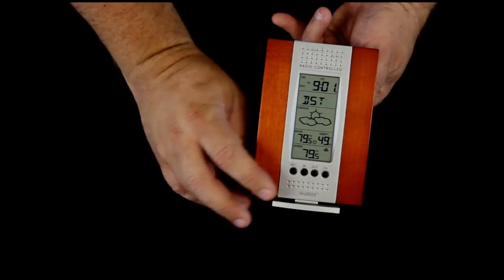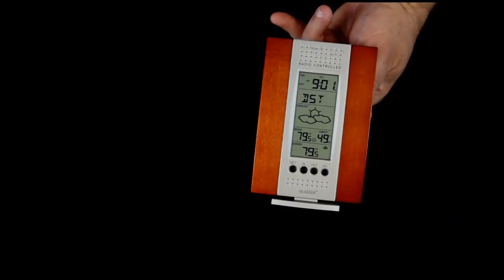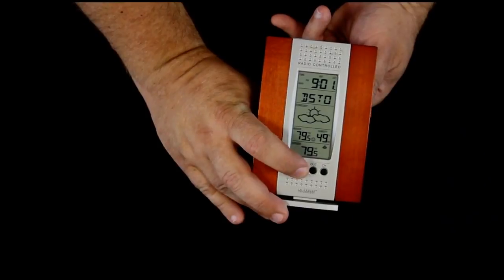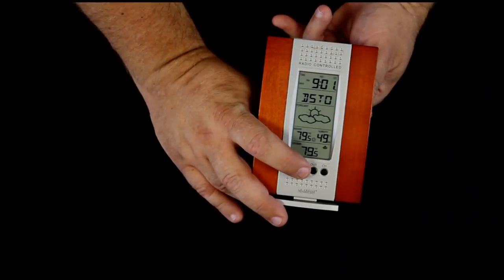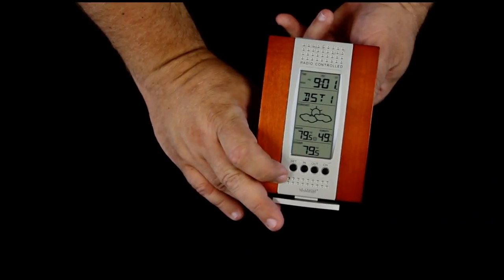Pressing and releasing the set button again shows us daylight savings time mode. A flashing 1 means that we're set up for daylight savings time. If we want, we can press the in button, take it to 0, and now it will not recognize daylight savings time. The west coast does, so we'll take it to 1.